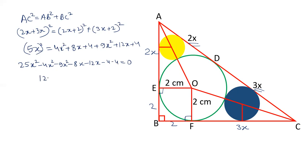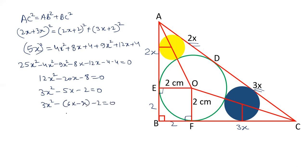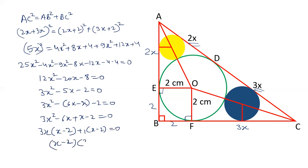Simplifying: 12x² − 20x − 8 = 0. Dividing by 4 we get 3x² − 5x − 2 = 0. Splitting the middle term: 3x² − 6x + x − 2 = 0, giving 3x(x − 2) + 1(x − 2) = 0, so (3x + 1)(x − 2) = 0. Therefore x = 2 (taking the positive value).